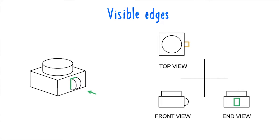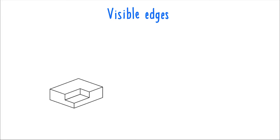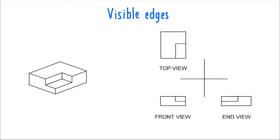In this third object, solid lines depict indents or cutouts that are visible from each of the views. Just like with a protruding feature, the proportion rules are the same. The overall height of a cutout is going to be the same in the front view and the end view. You can use the front view to determine the width of the cutout, and the end view to determine the depth of the cutout.